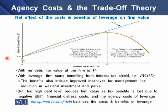We see that at the level where there is no debt, the value of the firm is VU — that is the unlevered value of this firm. With leverage, the firm starts benefiting from the interest tax shield, which is basically the product of present value, tax rate, and the level of debt. The benefits also include improved incentives for management, like reduction in wasteful investments and perks on the owners of the firm.